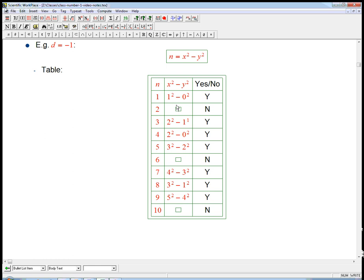For example, 2, I'm claiming here that it is not possible to write it as a difference of two squares. And you might want to just stop the video and play with it for a while and just see if you can figure out, if you can convince yourself that that's not true.